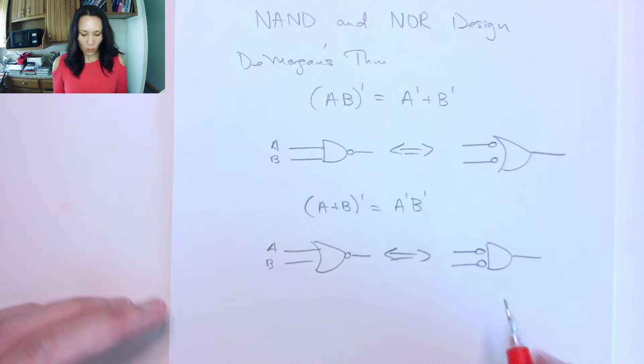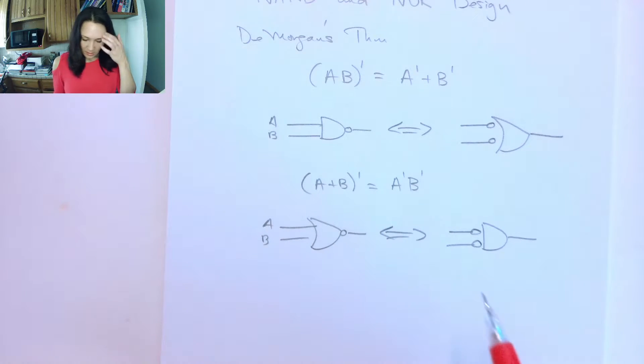So why would we do this? The answer is that it turns out actually NANDs and NORs are easier and cheaper to manufacture than ANDs and ORs because they require fewer transistors. And depending on what your design constraints are, there are ways to implement any circuit that has an AND and OR in a NAND-NAND or a NAND-NOR or an OR-NAND implementation.